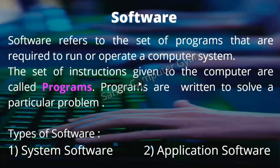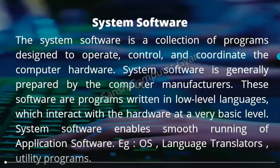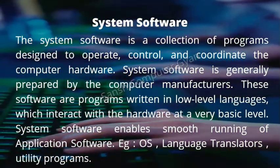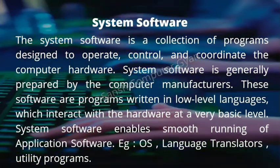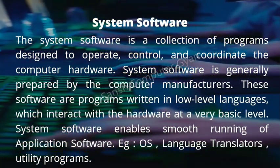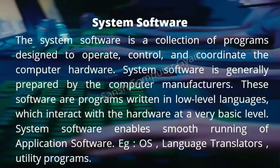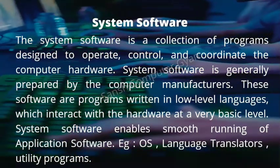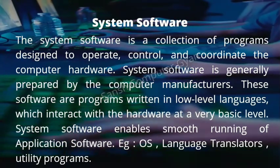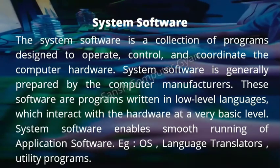Under system software, we have operating system, language processor, and utility software. Under application software, we have general-purpose software such as data entry. System software is a collection of programs designed to operate, control, and coordinate the computer hardware. System software is generally prepared by computer manufacturers and written in low-level languages that interact with hardware at a very basic level.